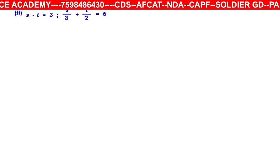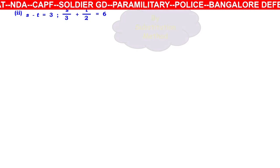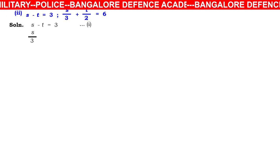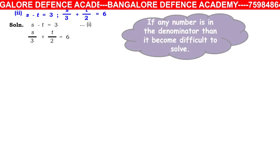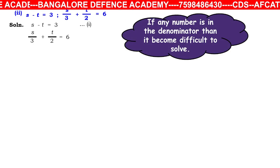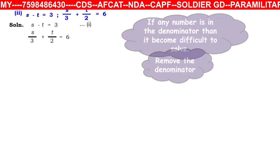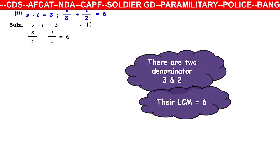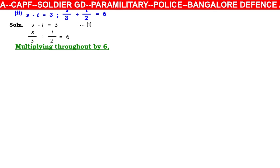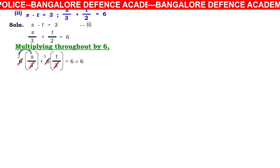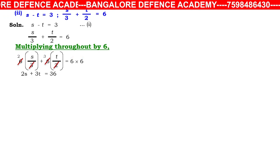Next question: s − t = 3 (equation 1) and s/3 + t/2 = 6 (equation 2). Since equation 2 has denominators 3 and 2, first remove them by multiplying throughout by their LCM, which is 6. This gives 2s + 3t = 36 — call this equation 2.